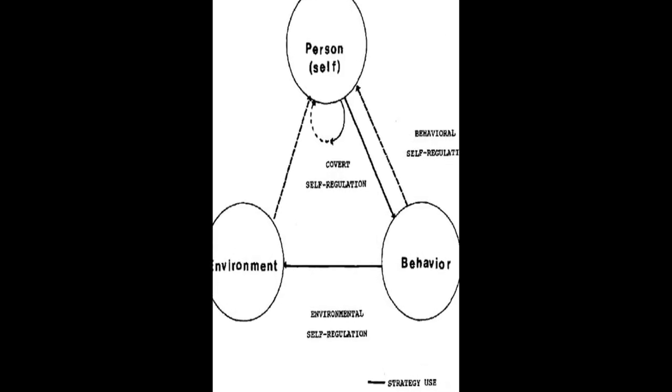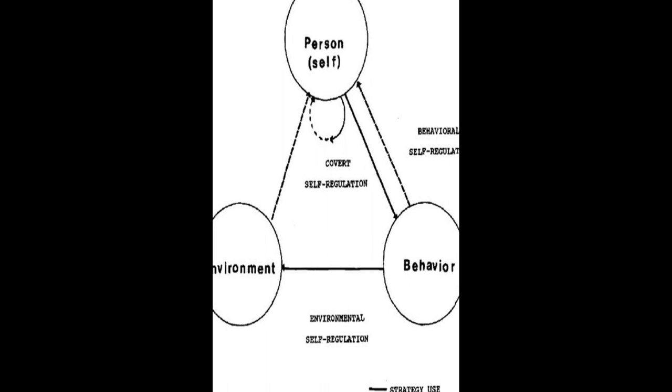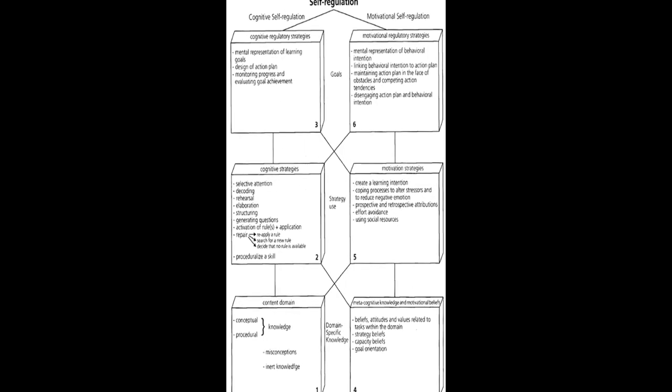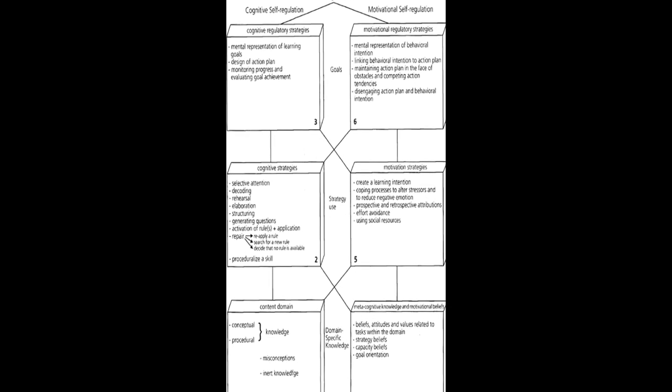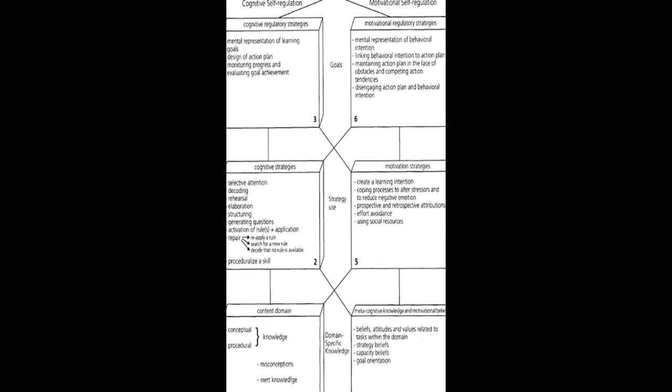The models are then compared in terms of phases and subprocesses, how they conceptualize metacognition, motivation, and emotion, top-down/bottom-up, automaticity, and context.